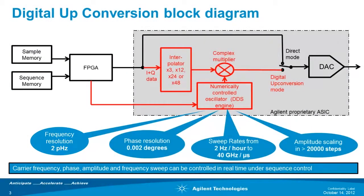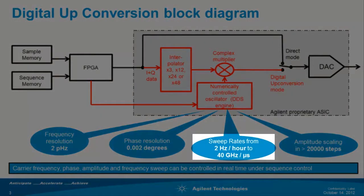The NCO also enables very precise frequency sweeps from 2 Hz per hour all the way up to 40 GHz per microsecond.